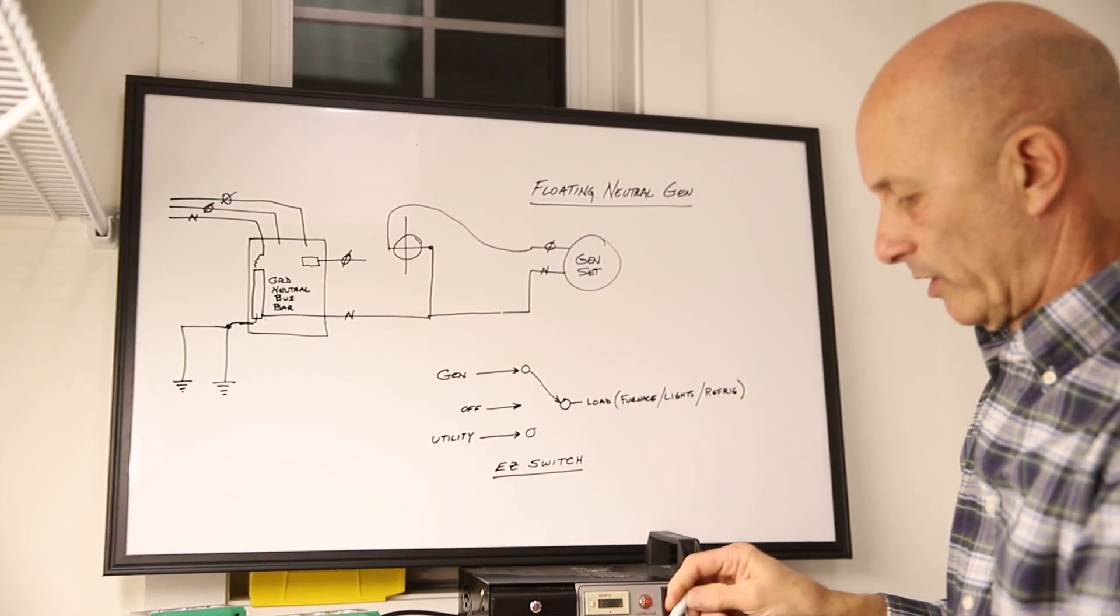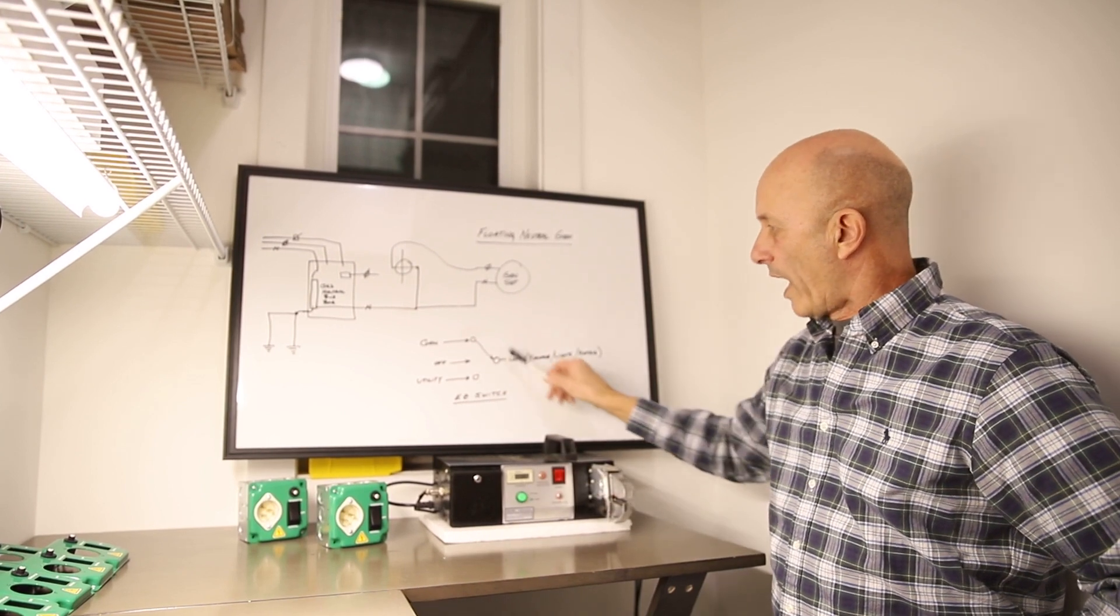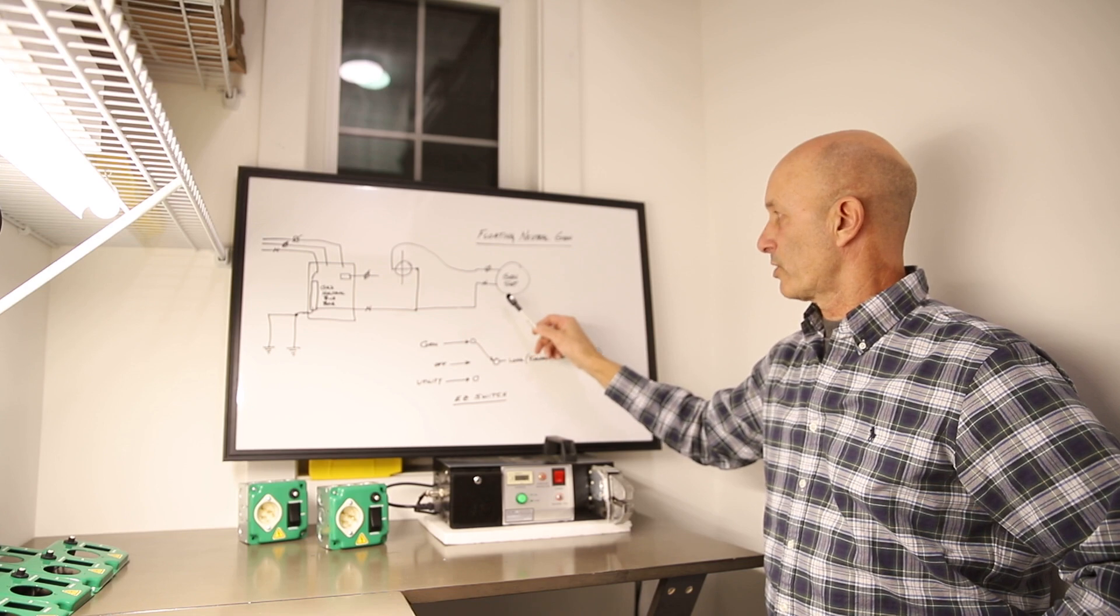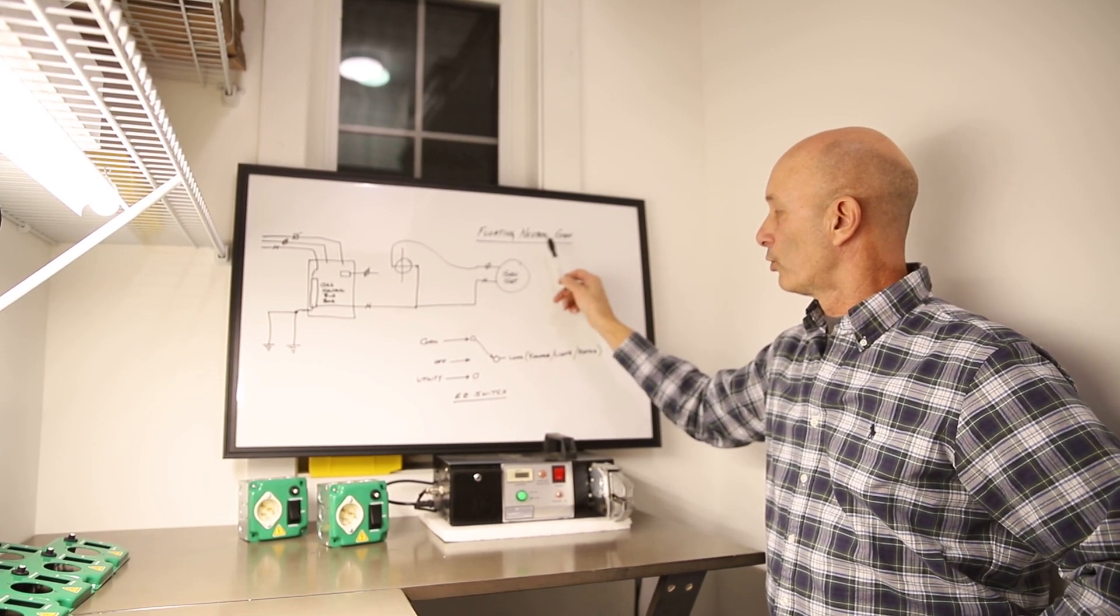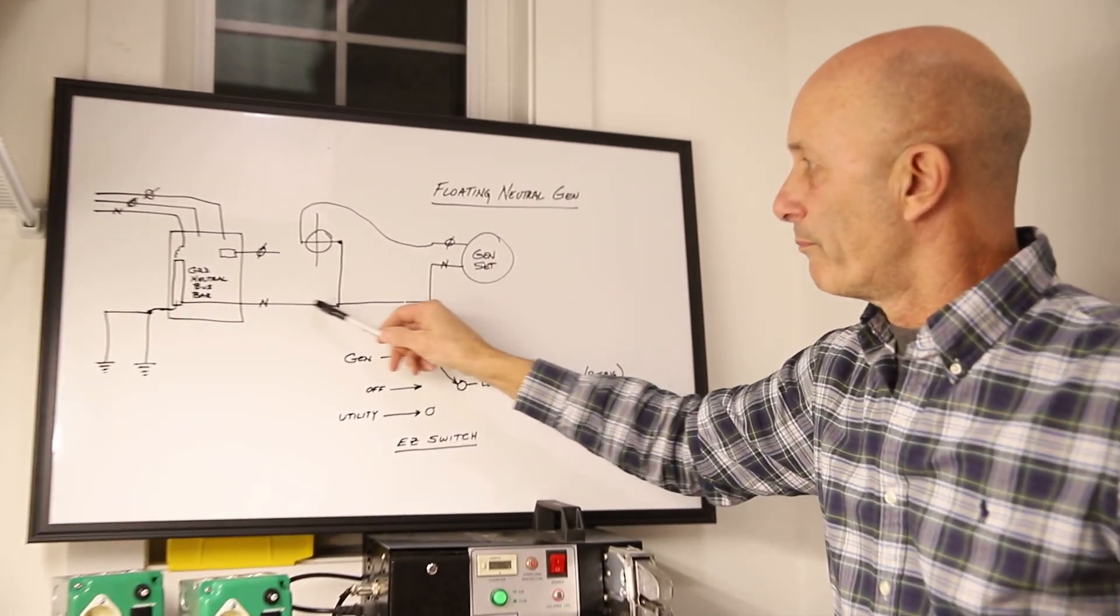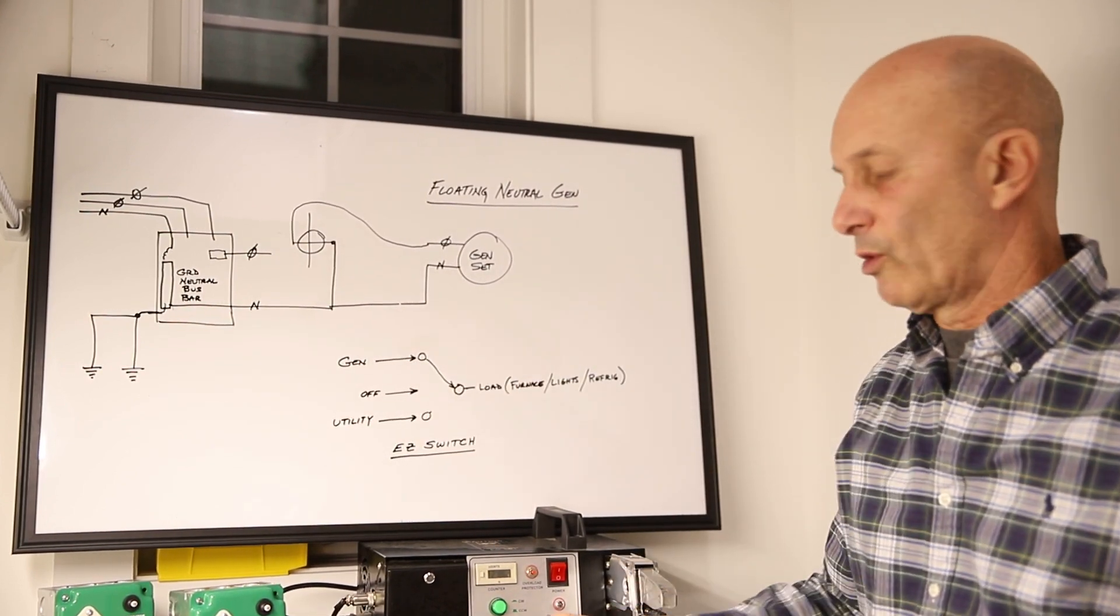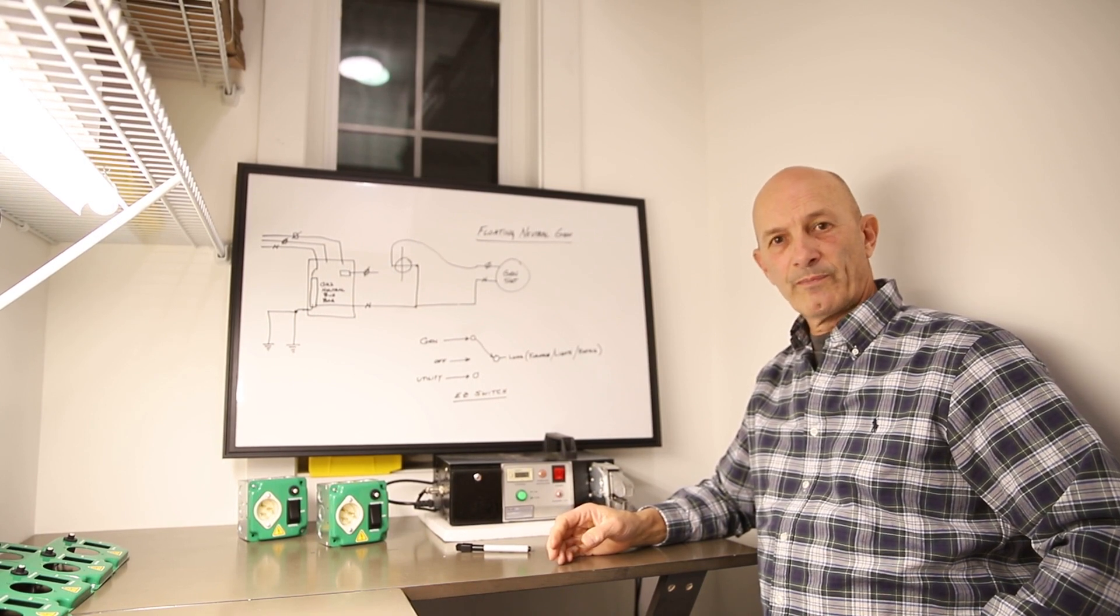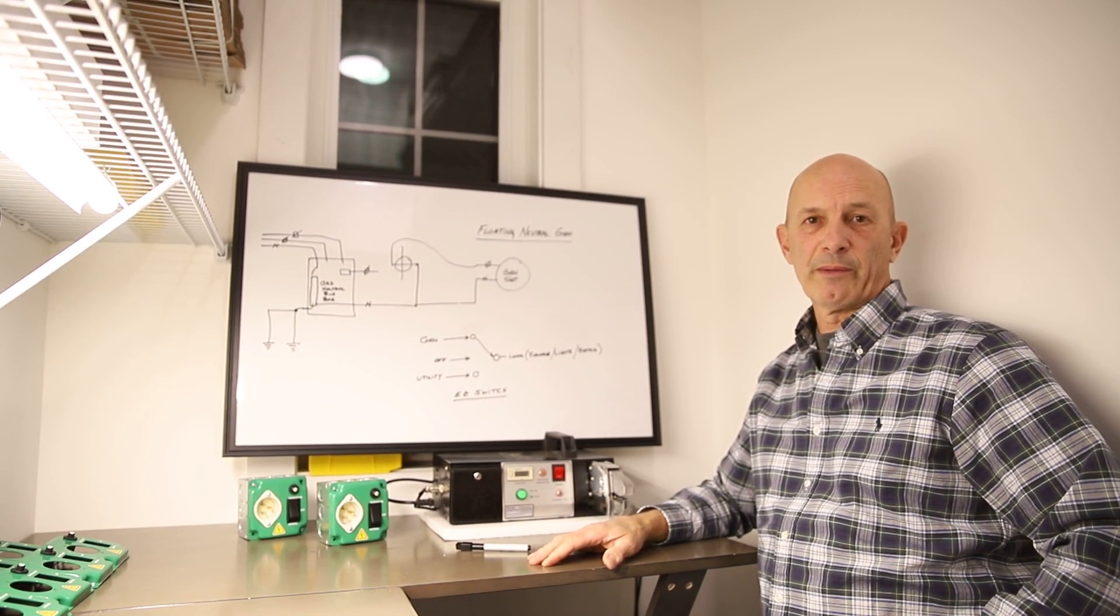So, hopefully that resolved the idea of why a generator transfer switch will not backfeed, and it'll also help you understand why your generator, although connected in a floating neutral connection, will not backfeed on that neutral. It will just dissipate to those two ground rods. So, I hope that helped, and we will continue to make videos as you ask for them. And if you have any questions, send us an email. I appreciate it. Thanks. Bye-bye.